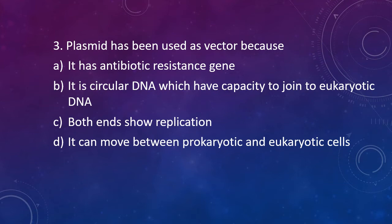Question 3: Plasmid has been used as a vector because — Option A: It has an antibiotic resistance gene. Option B: It is a circular DNA which has the capacity to join to eukaryotic DNA. Option C: Both ends show replication. Option D: It can move between prokaryotes and eukaryotes. The correct answer is Option B — it is a circular DNA which has the capacity to join to eukaryotic DNA.